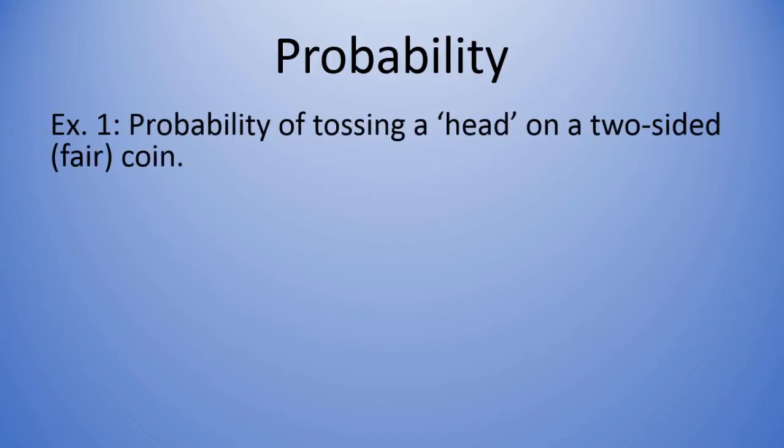Let's go ahead and take an example. So the probability of tossing a head on a two-sided coin. Now we're assuming for this example that the coin is fair, that is that it's as equally likely to come up heads as it is to come up tails.